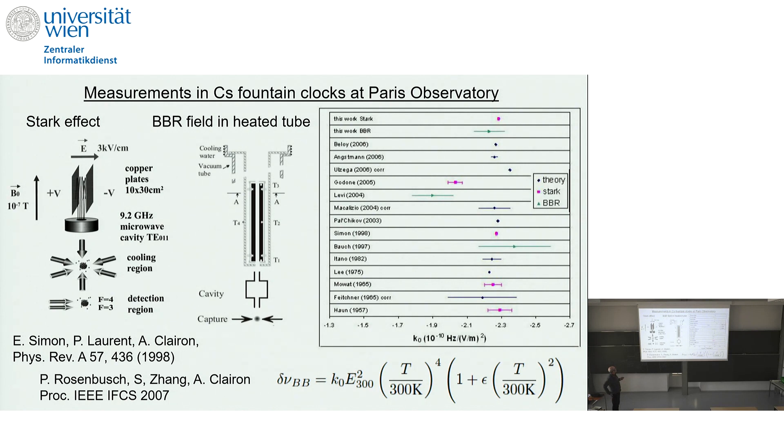But since then, people have improved on these measurements with cold cesium atoms. It was mainly the groups in Paris working with cesium fountains of laser-cooled atoms. So here you see laser-cooled atoms being prepared and thrown up against gravity and then passing a microwave cavity doing the Ramsey interaction. Of course, much longer interaction time than in the beam clock that I've shown you before. And then they did two experiments. They placed field plates above the cavity so that the free-flying atoms would be exposed to a kilovolt per centimeter electric field in order to measure the static Stark effect. And then they also put a heated tube there where the atoms would be flying through a blackbody field at higher temperature.